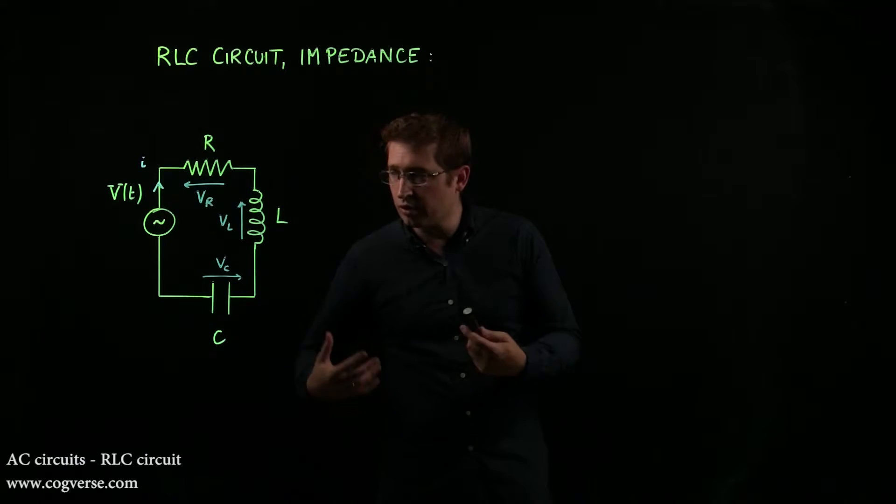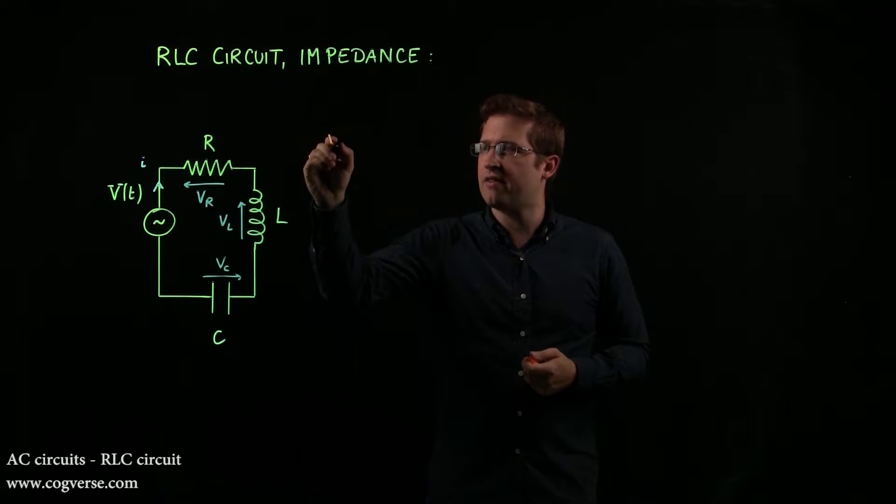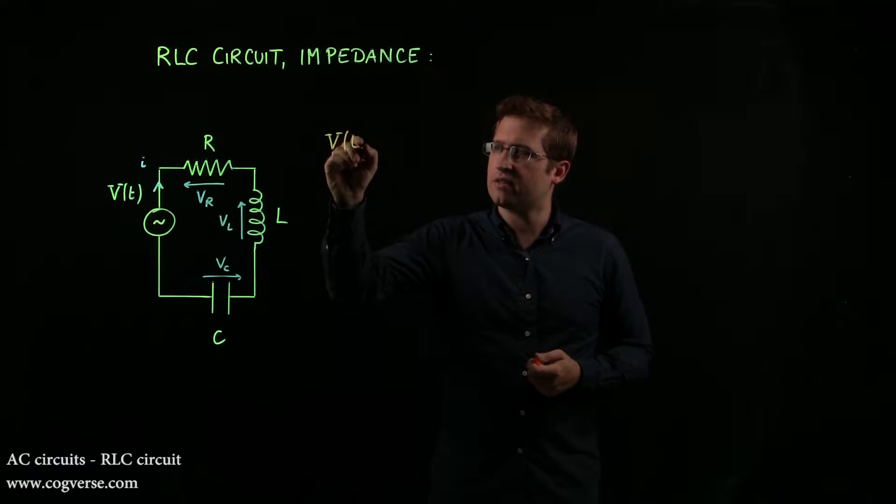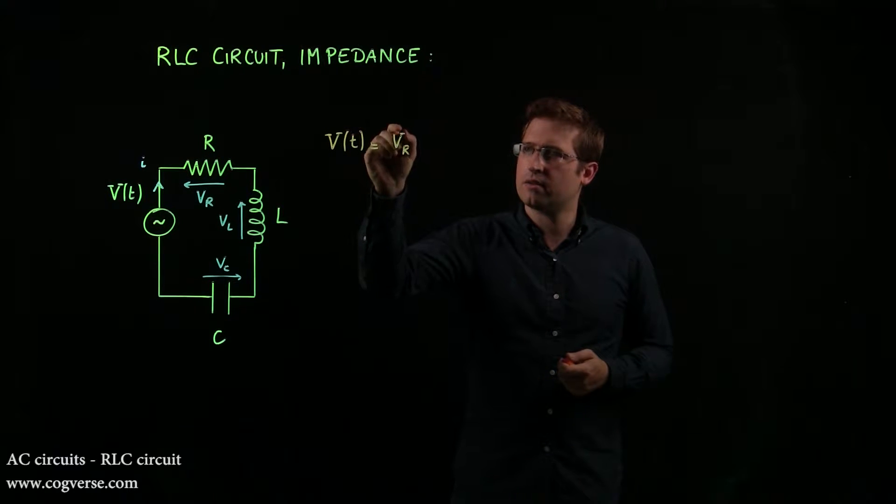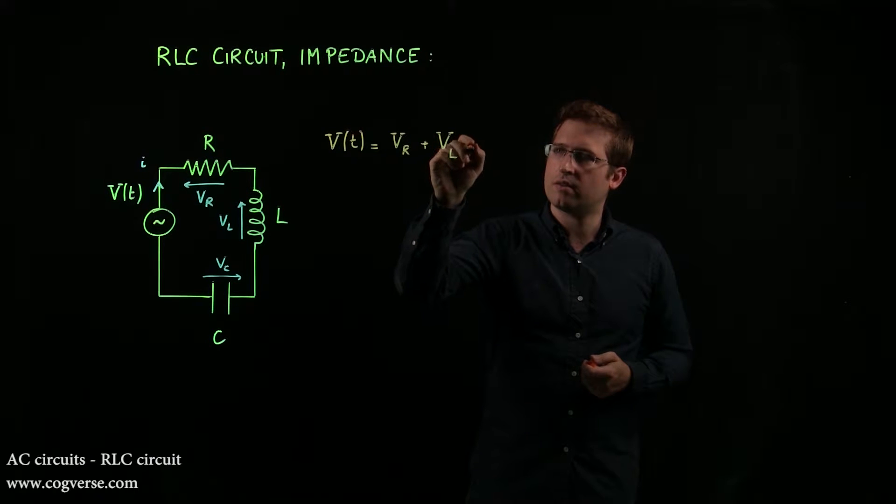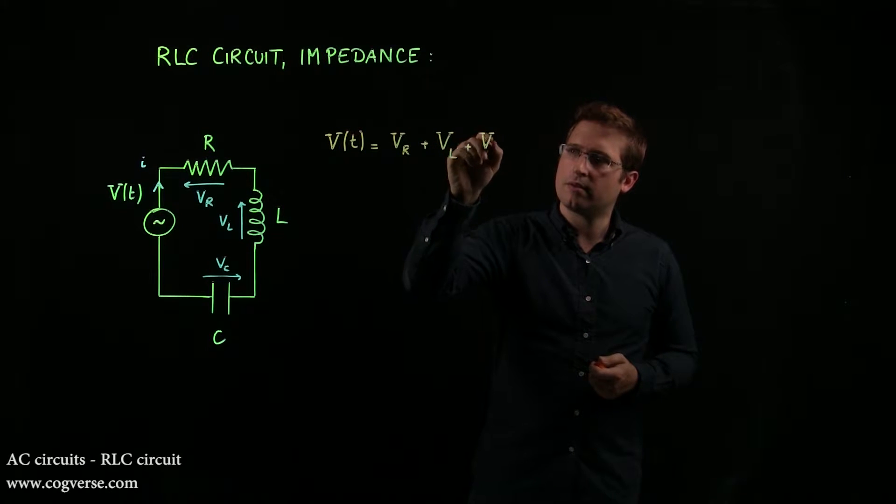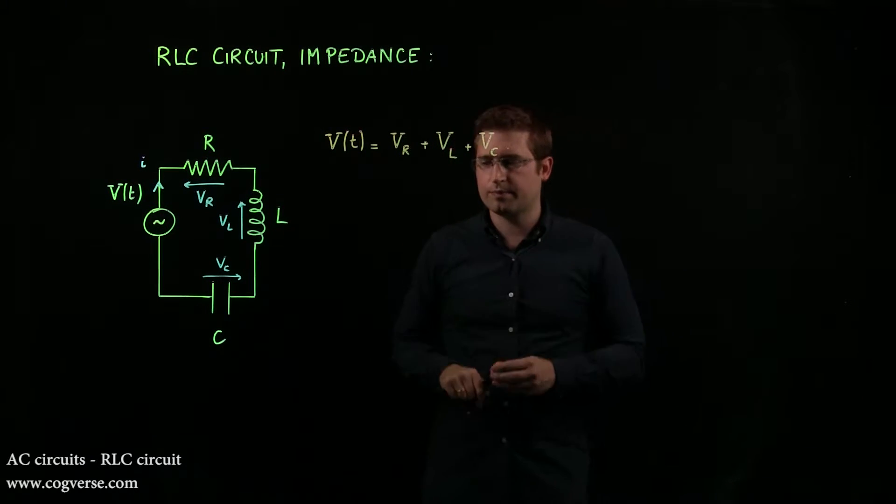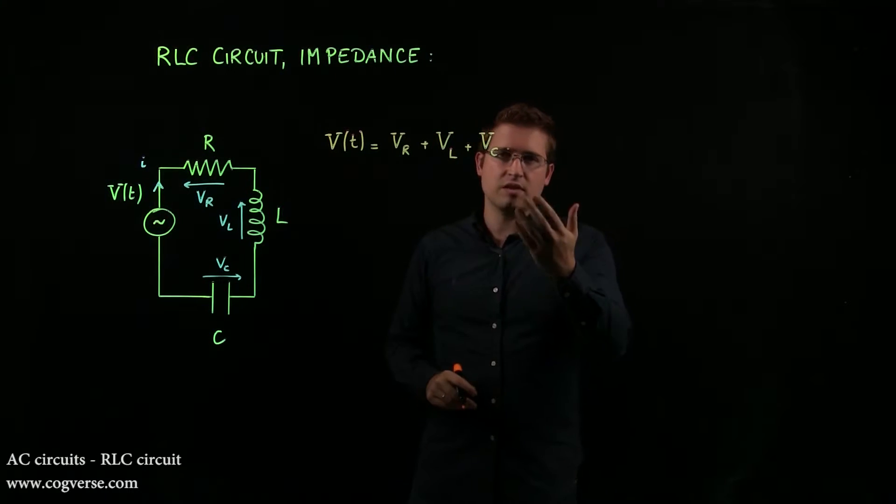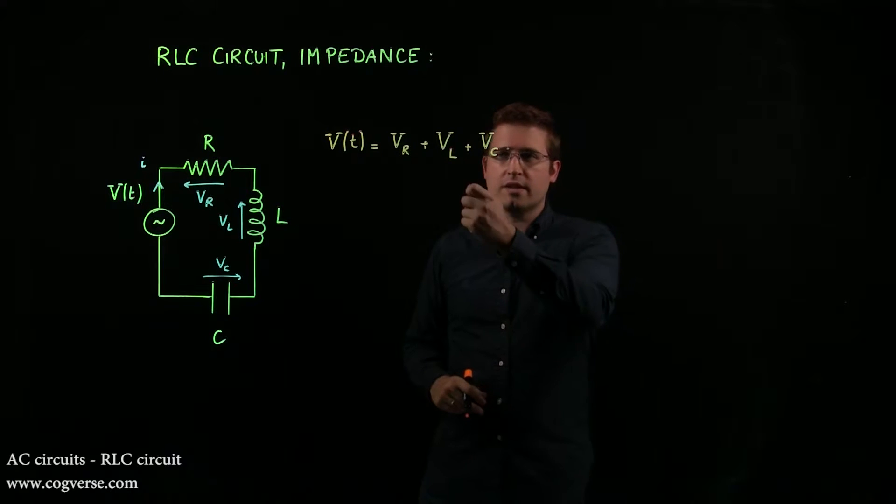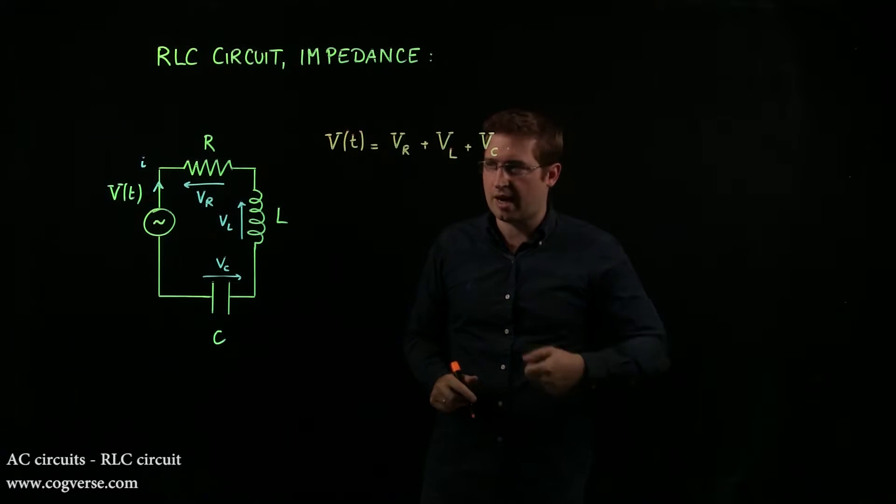And if we write the loop law, we find that V is equal to Vr plus Vl plus Vc. But if you remember, previously, we related Vl and Vc to current through the inductive reactance and the capacitive reactance.